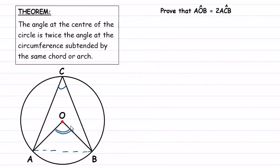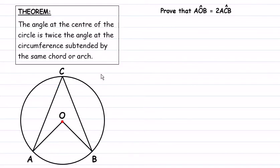So this just means that if the angle at the center is 80 degrees, then the angle at the circumference would be 40 degrees because they have been supported by the same arc. We're going to go ahead and prove this theorem — specifically, we need to prove that angle AOB, the angle at the center, is twice the size of angle ACB.